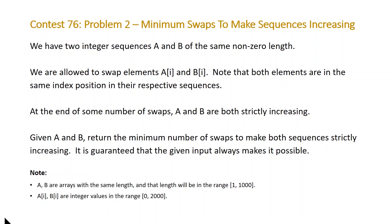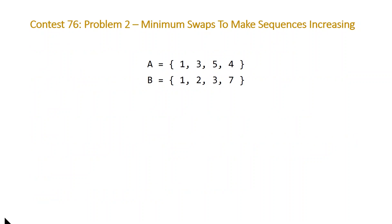Note that a and b are going to have a length of at most 1000 and the values in a and b are going to be between 0 and 2000. Here we have two sequences: a is [1,3,5,4] and b is [1,2,3,7]. The question is asking what's the minimum number of swaps of two elements in arrays a and b that are at the same index, that are going to result in a and b being strictly increasing.